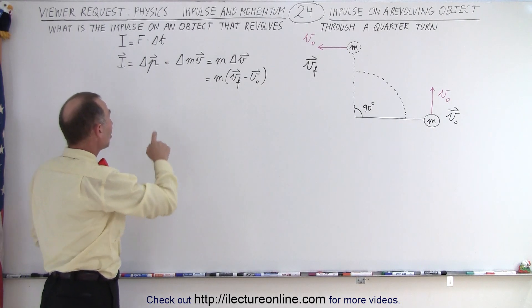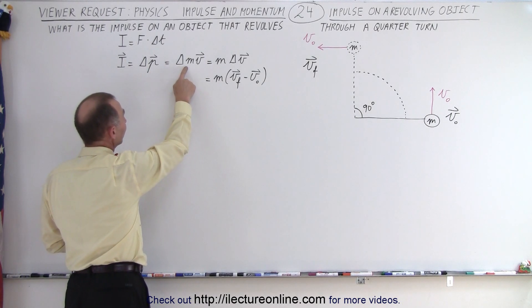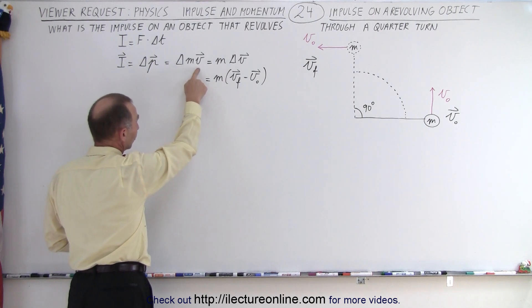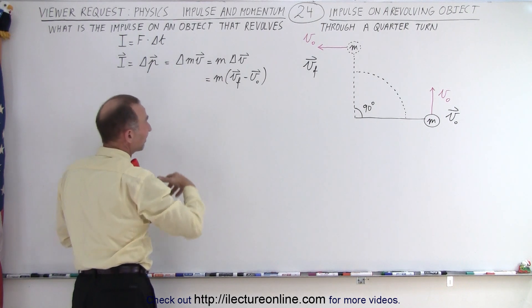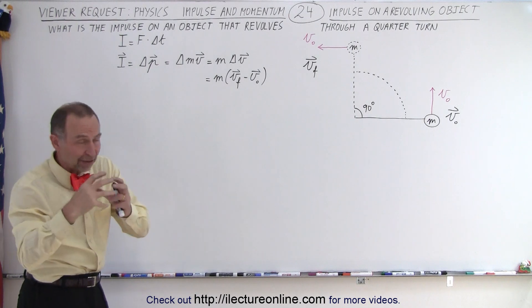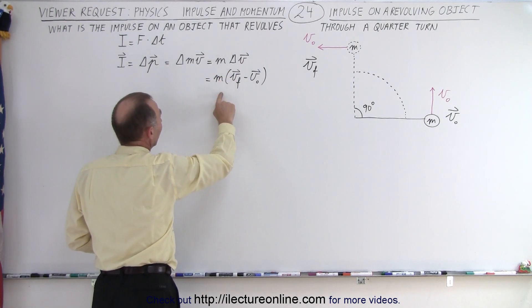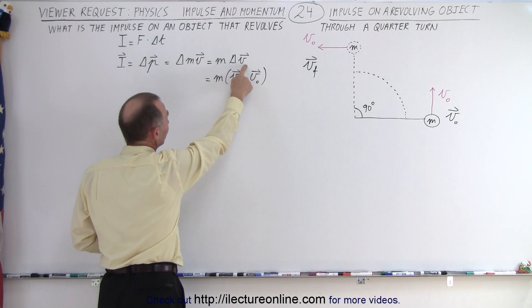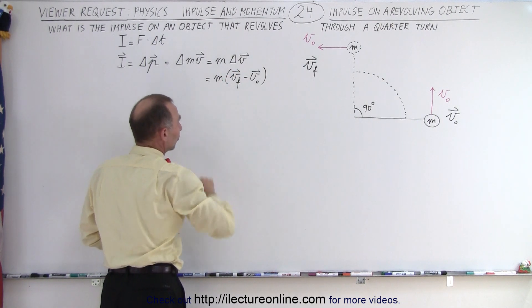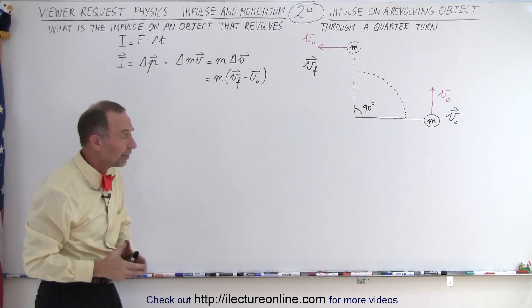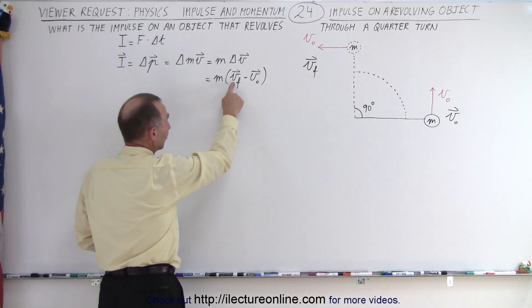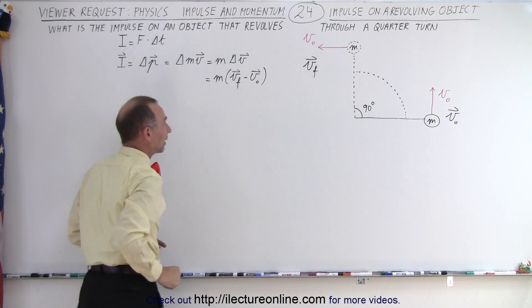And so the change in momentum, since momentum is mass times velocity, and velocity is a vector quantity, it's the change in m times v. Since m doesn't change, it's the mass of the object, it can come out, and so we can say that the change in velocity is the final velocity minus the initial velocity. So we take the difference in the velocities, notice that they are vector quantities, and we multiply times the mass.